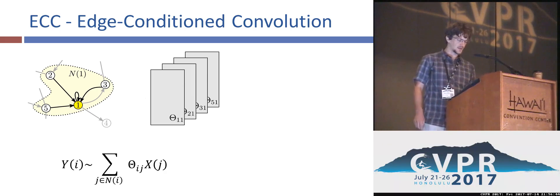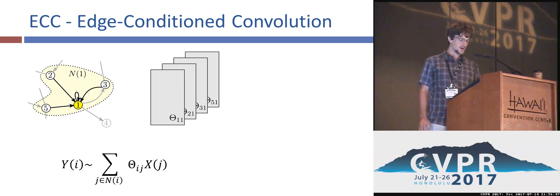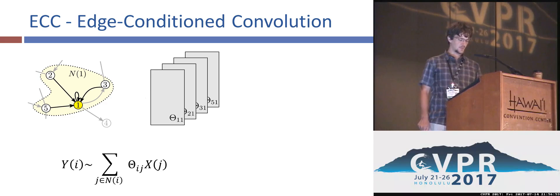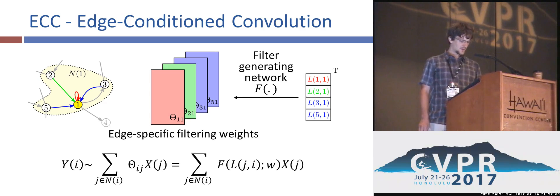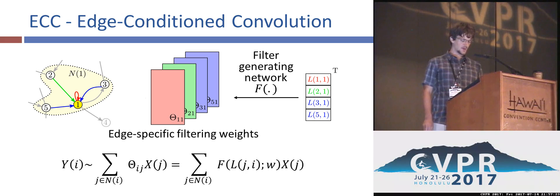Let me briefly introduce our method. Generally, convolution amounts to a weighted sum of vertex features x in the local neighborhood. For example, to compute the convolution at vertex 1, we consider the features at its predecessors and at the vertex itself. The question is how to share filters theta among all the edges in the graph. We propose to condition them on the respective edge attributes vector L and generate them using a single filter generating network F. In other words, instead of learning filter weights themselves, we learn a function which provides them dynamically. In the example, information is propagated the same way over the blue edges and differently over the red or the green edge.